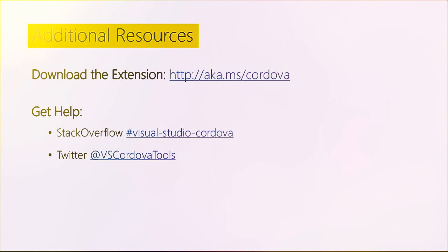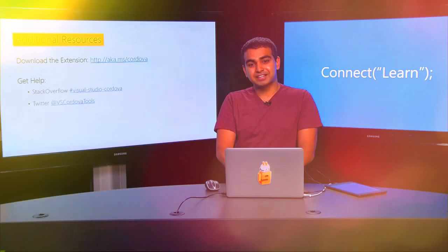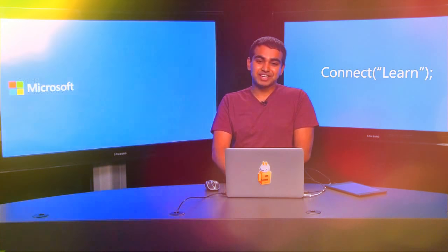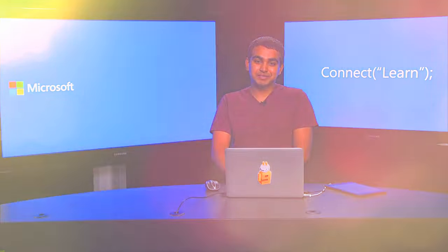You just saw how to test your application on Ripple, on an emulator, and on a physical device. If you haven't had a chance to play with our tools yet, go ahead and download them from aka.ms/Cordova. If you have any questions, ping us on Stack Overflow using the Visual Studio Cordova tag, or tweet to us at VSCordovaTools. I will see you guys next time.